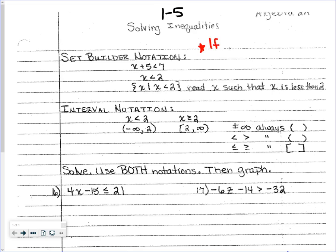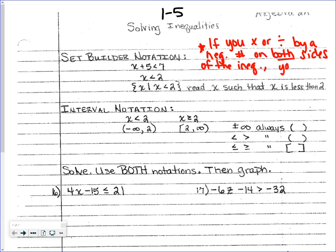Something important to add: if you multiply or divide by a negative number on both sides of the inequality, you must switch the inequality sign. For example, if this had negative two and I divided by negative two, I would switch from a less than sign to a greater than sign. We'll have examples of that in just a second.